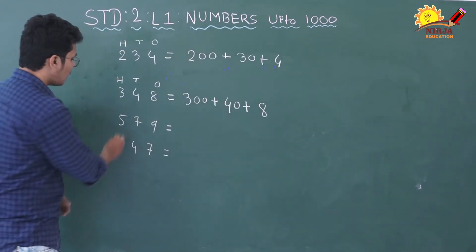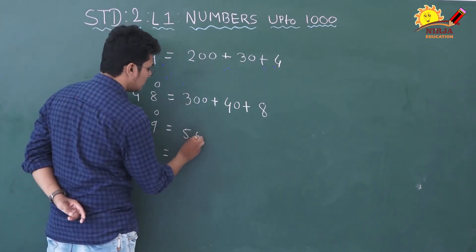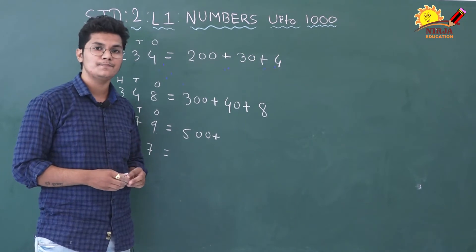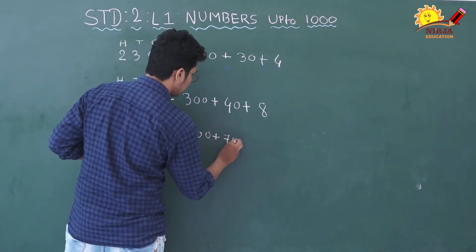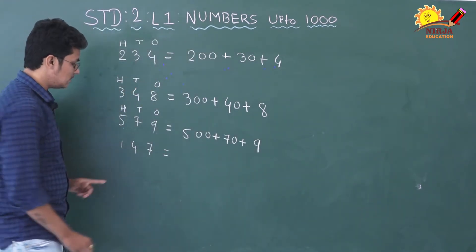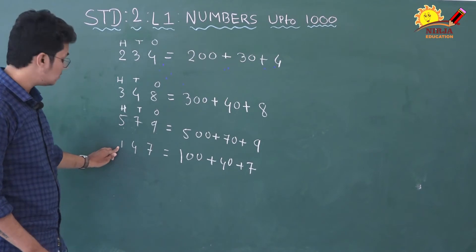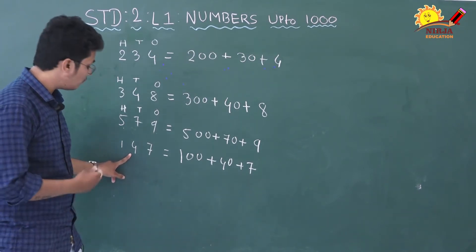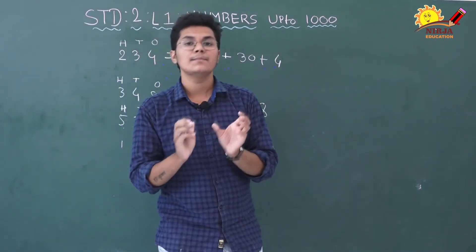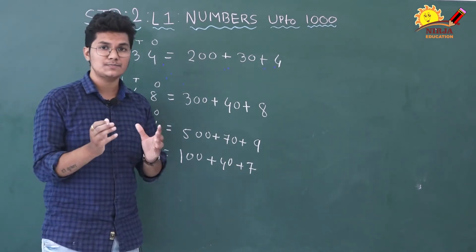Isi tarah yeh do numbers. 579: 5 ki place value hoi? 500. Plus, 7, tens ke place peh hai. So, 7 ki place value hoi? 70. And last mein, 9, ones ke place mein hai. To, 9 ki place value hoi? 9. Phir, 147: so, 100 plus 40 plus 7 is our answer. 1 hundreds ke place mein hai, to uski place value hoi 100. 4 tens ke place peh hai, to uski place value hoi 40. And 7, ones ke place peh hai, to uski place value hoi 7. So, expanded form matlab: number mein jitne bhi digits hain, un sab digits ki place value, summation ke form mein likhna. To use kehte hain expanded form.